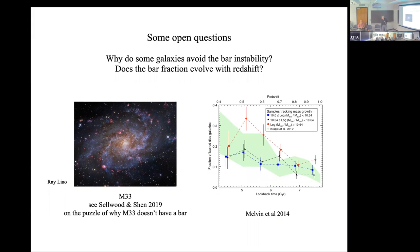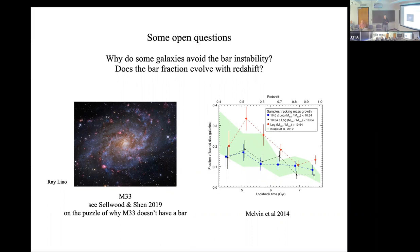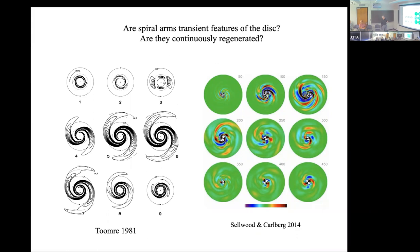At low redshift the bar fraction tends to rise with time, and that depends on the mass of the galaxies. Other questions we might ask: are spiral arms transient features of a disk or are they continuously regenerated? This goes back to early work by Toomre and others on swing amplification, where we believe that the process of swinging a leading perturbation into a trailing perturbation — amplified along the way — is responsible for spiral structure. There's been more recent work by Sellwood and Carlberg that tries to get at what perturbations start off the swing amplification process and whether spirals can be regenerated.